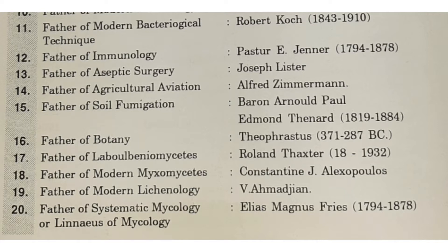Father of immunology: Pasteur and Jenner. Immune chahiye to Pasteur ke paas jao, gene mil jayega — Jenner. Then father of aseptic surgery is Joseph Lister. Lister — list bana ke surgery karne ka (make a list and do surgery).